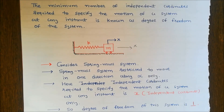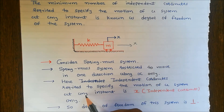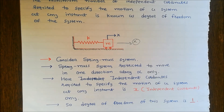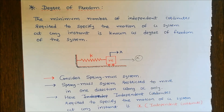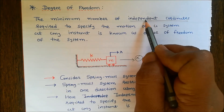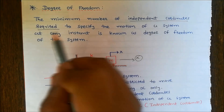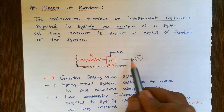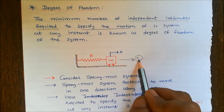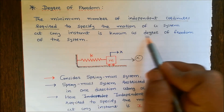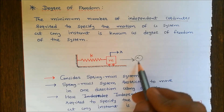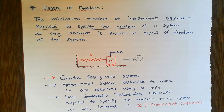Here, the independent coordinates required to specify the motion of the system at any instant is x. So the degree of freedom of this system is one. The minimum number of independent coordinates required to specify the motion — here the motion is along only the x direction — so the independent coordinate required is x. In the spring-mass system restricted to move in one direction along x, the degree of freedom is one.